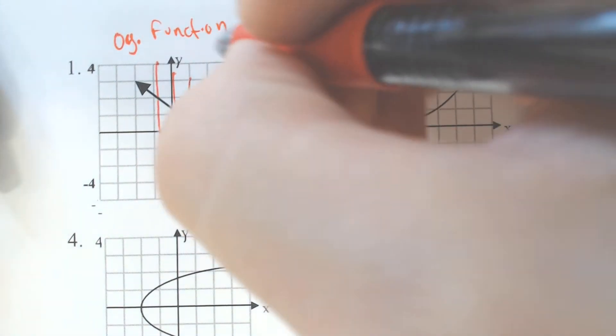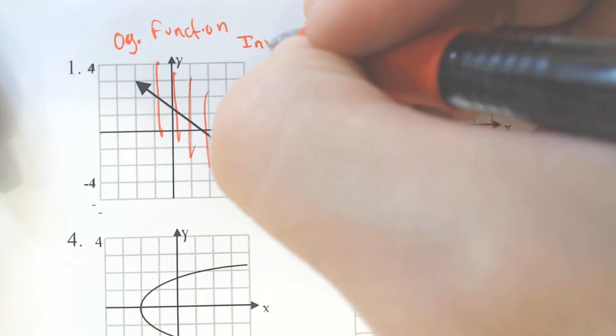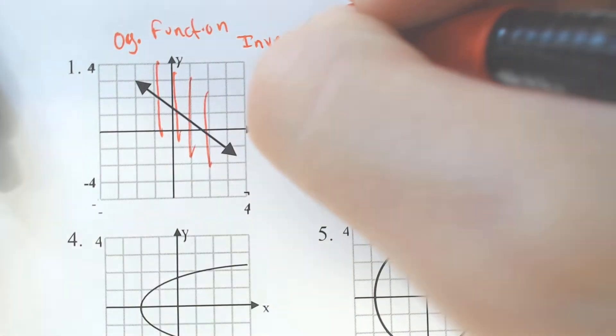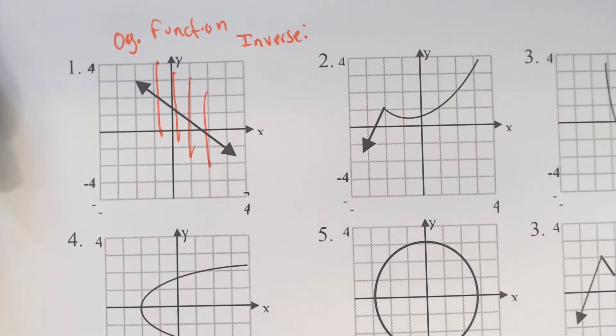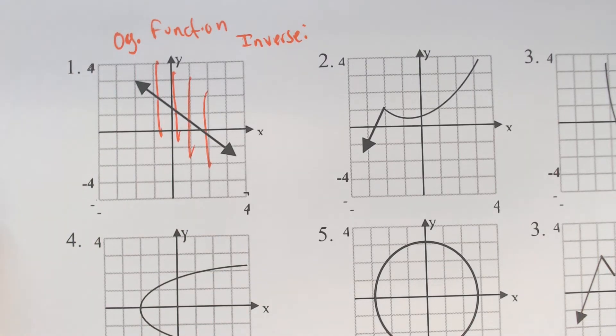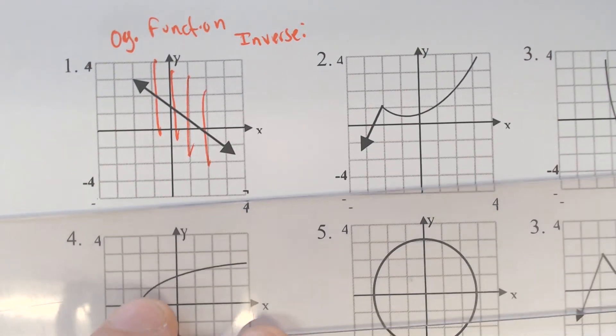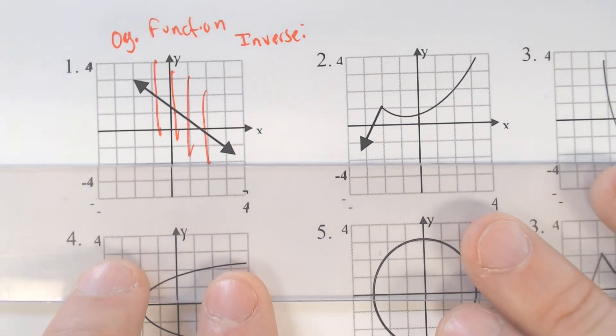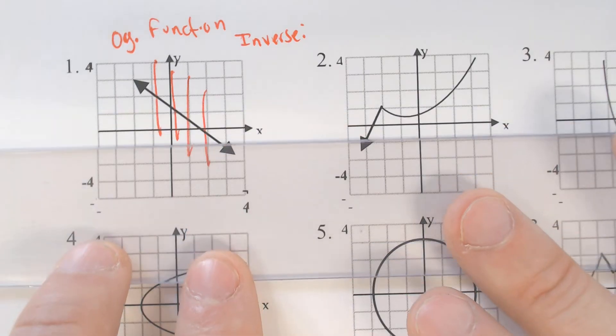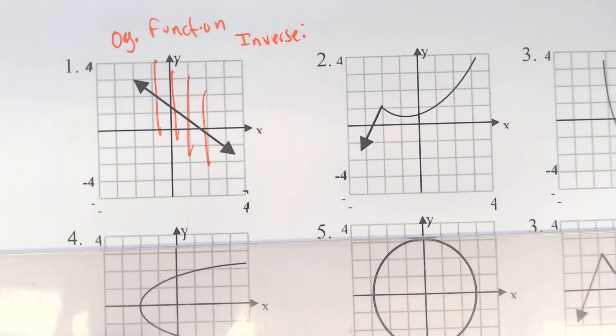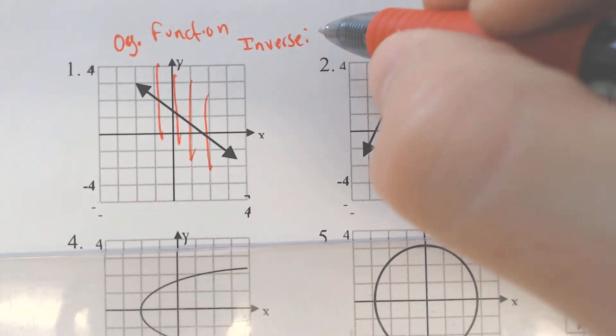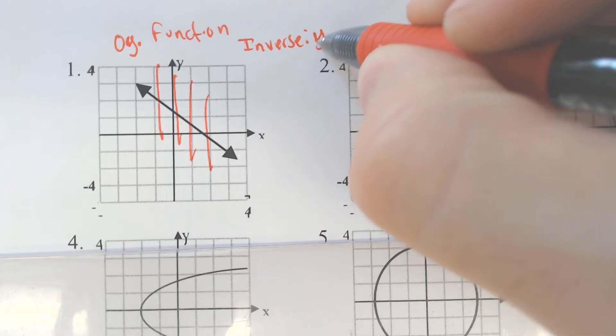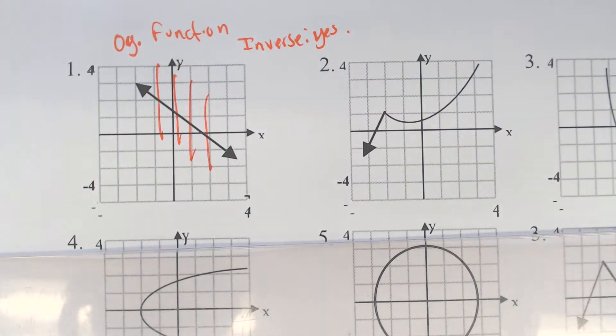But would the inverse be a function? The answer to that one would be if and only if it passes the horizontal line test. So if you were to draw a line horizontally on here, would it cross through more than once? And the answer is no. It also would pass this horizontal line test, which means on number one, the inverse is a function as well.